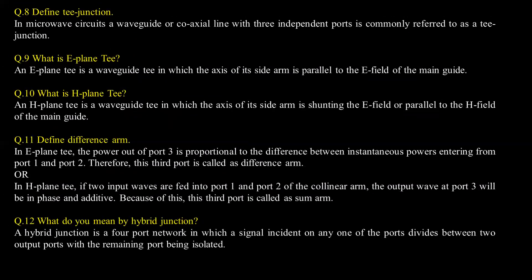Define T junction. In microwave circuits, a waveguide or coaxial line with three independent ports is commonly referred to as a T junction. What is E-plane T? An E-plane T is a waveguide T in which the axis of its side arm is parallel to the E-field of the main guide.